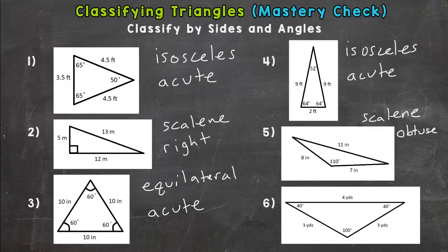Number six. We have two side lengths that are congruent, so isosceles. And we have one angle that is greater than 90, so obtuse.